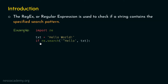The line of code we need is: 'if re.search(...)'. We are using the search function from the RE module using the dot operator. To this function, we provide two arguments. The first argument is the string starting with the caret symbol followed by 'hello'. The caret symbol means 'starts with', so we want to search whether this string starts with hello or not. The second argument must be the string we want to search — here we pass the txt variable.